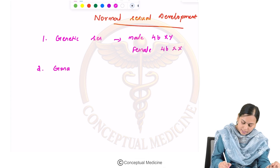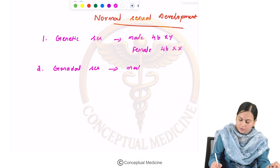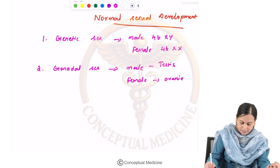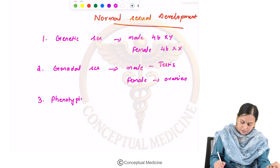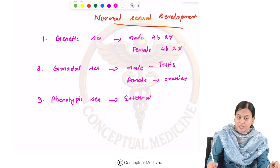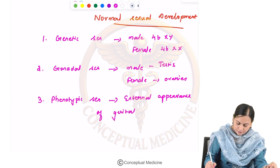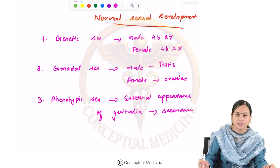The next one is gonadal sex — that means the male gonads are the testes and the female gonads are the ovaries. Next is phenotypic sex, which means the external appearance of the genitalia, including secondary sexual characters.